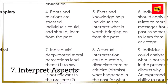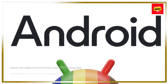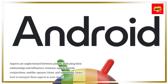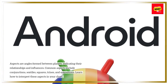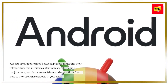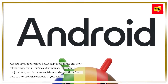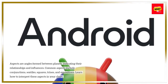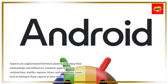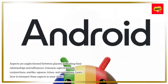Step 7: Interpret aspects. Aspects are angles formed between planets, indicating their relationships and influences. Common aspects include conjunctions, sextiles, squares, trines, and oppositions. Learn how to interpret these aspects in your chart.